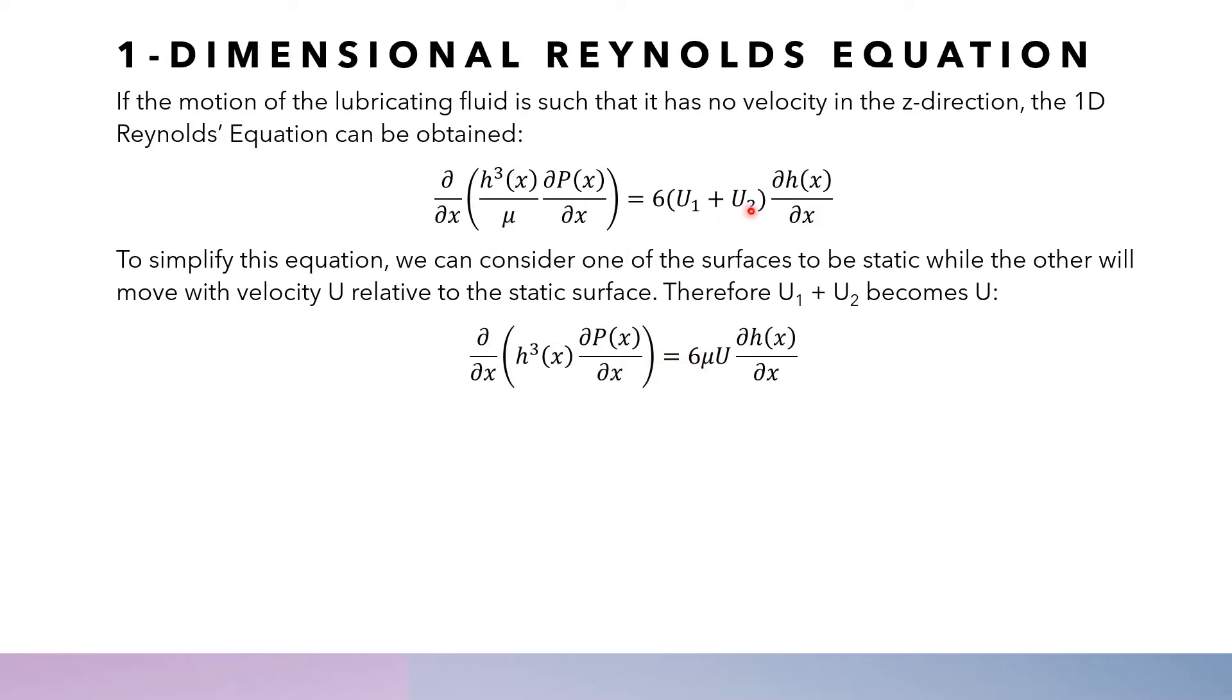If we bring μ over to this side, this partial derivative equals 6μU multiplied by ∂H/∂X. Double integration with respect to X leads to the following equation.